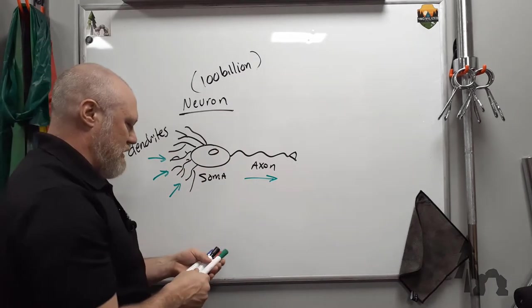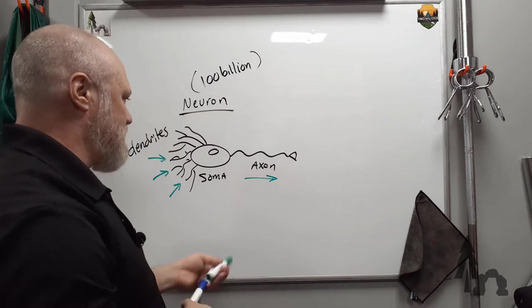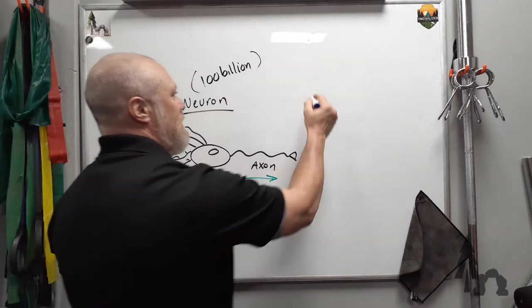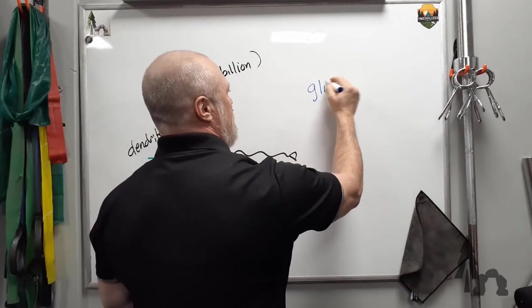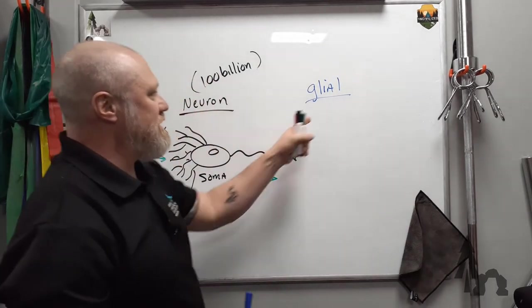So that's your basic nervous tissue cell is the neuron. The other type of cell that you find in the nervous system are glial cells. Glial cells, there's lots of different types of glial cells.